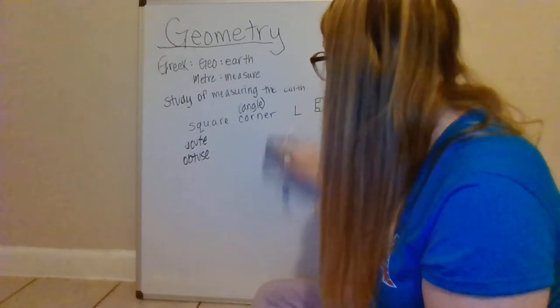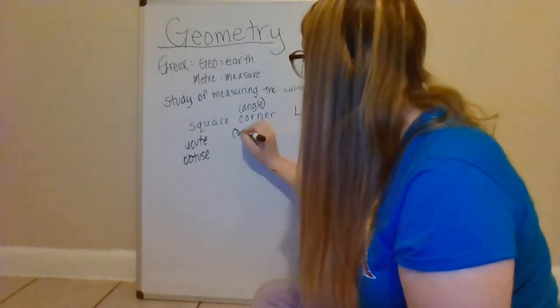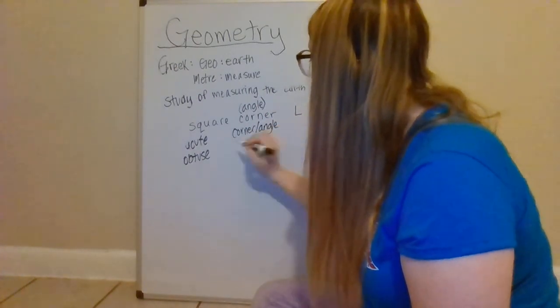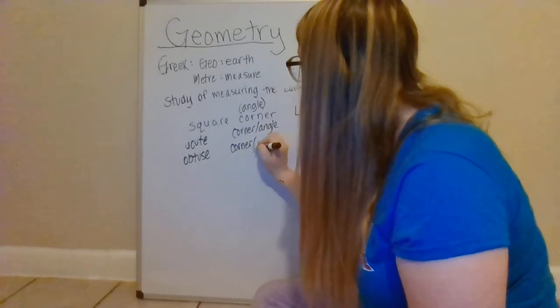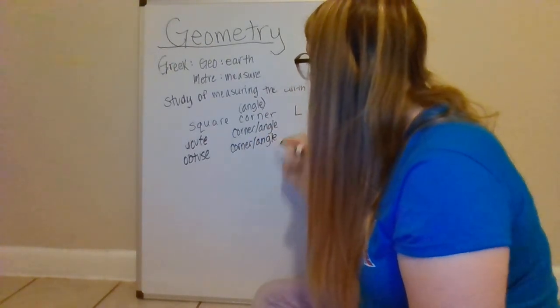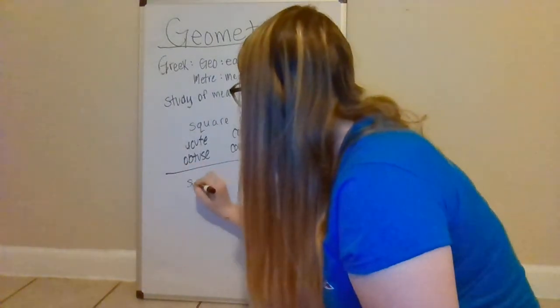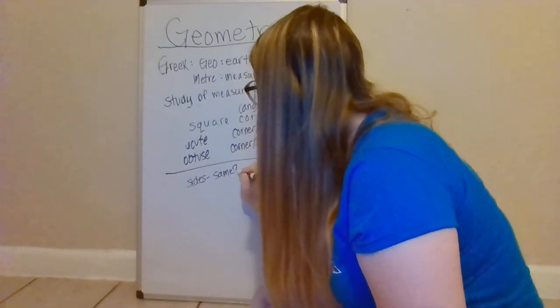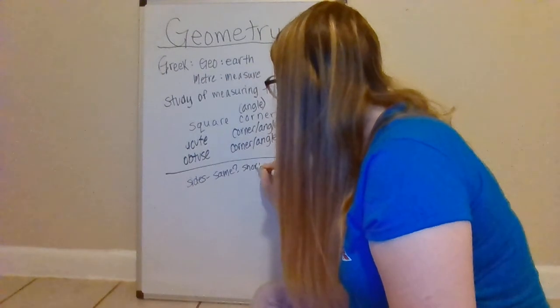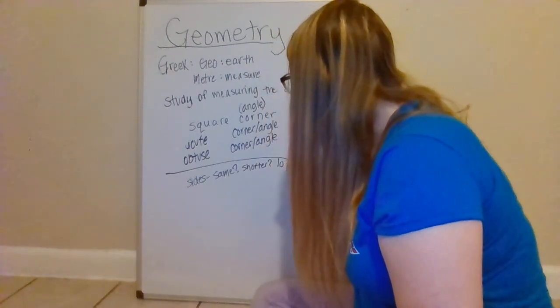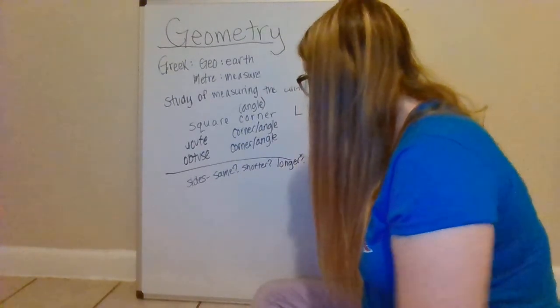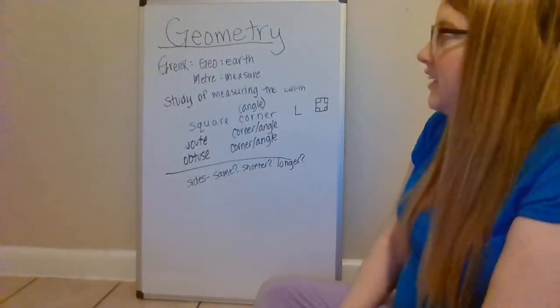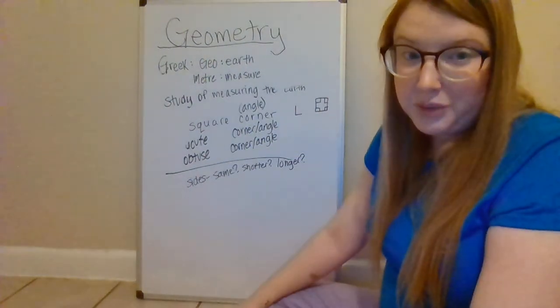So the biggest thing to think about here is do they have a square corner or angle? Do they have an acute? Do they have an obtuse? Then we want to know about the sides. Are they the same? Or are there shorter ones? Or longer ones?